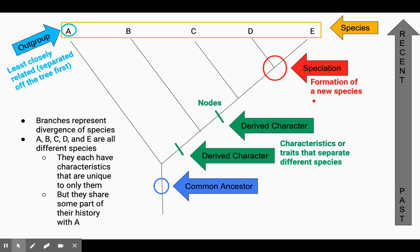Speciation is essentially just the formation of a new species. So each one of these, speciation occurred, right? A new species branched off.